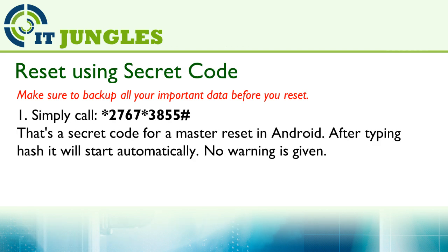Now you can also try to reset your device using the secret code. Simply open up your phone dialing pad and put in *2767*3855#. That's the secret code for the master reset in Android. After typing the hash, it will start automatically and no warning is given. So make sure that you have backed up all your data before putting in this special code.